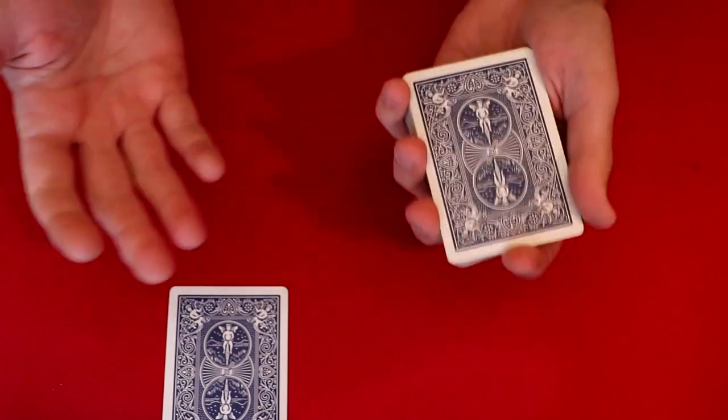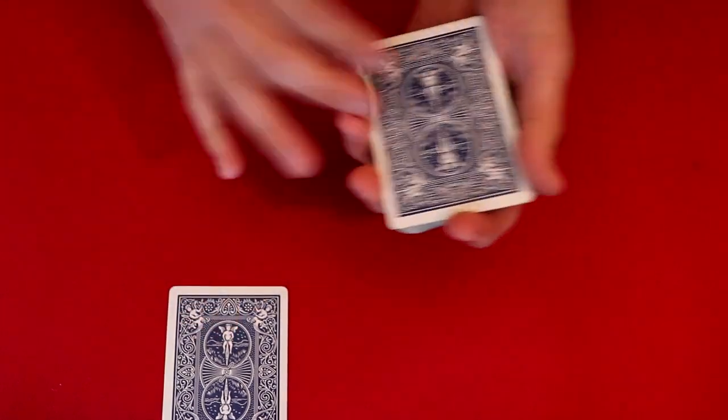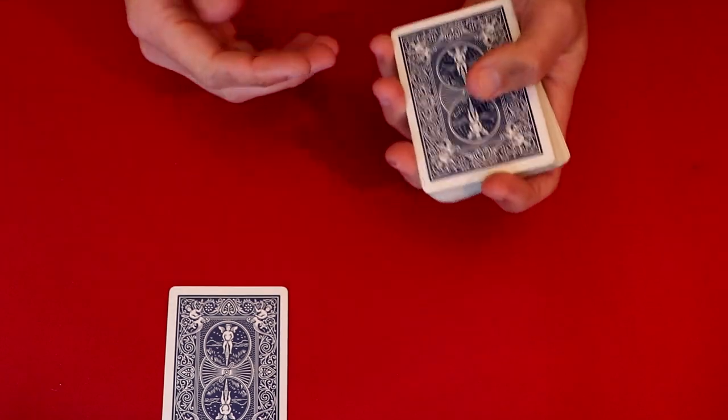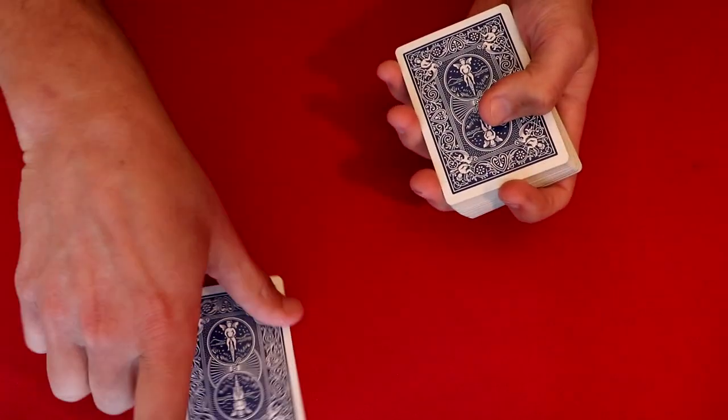And then from here, you can do whatever you want because you can stop the trick here to make it easier after you've done two double lifts. If you don't want to screw up, you can say, what was the first card that you picked? Then you can flip it over.